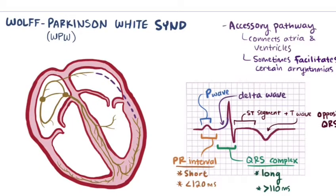Wolff-Parkinson-White syndrome is a pre-excitation syndrome because it has the presence of an accessory pathway which will connect the atria to the ventricles. Because of this, what will be the ECG changes?